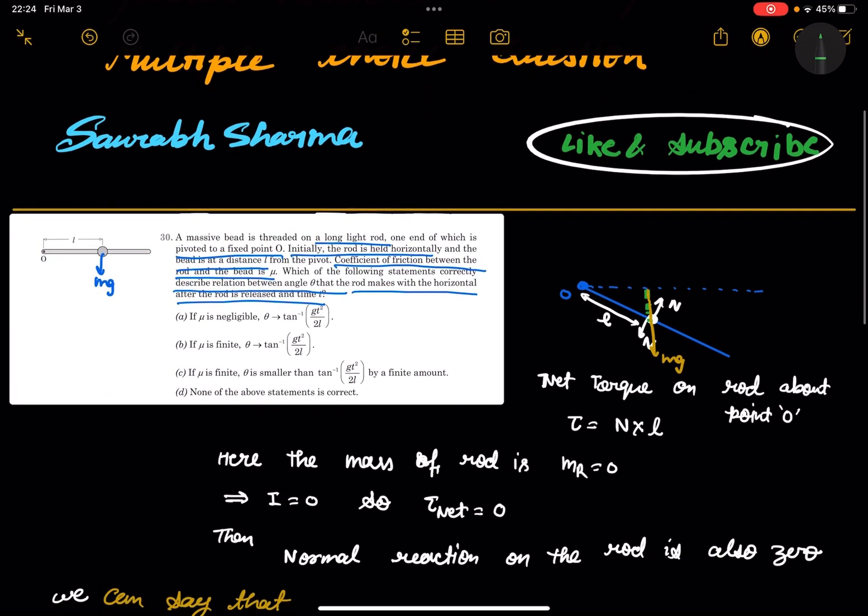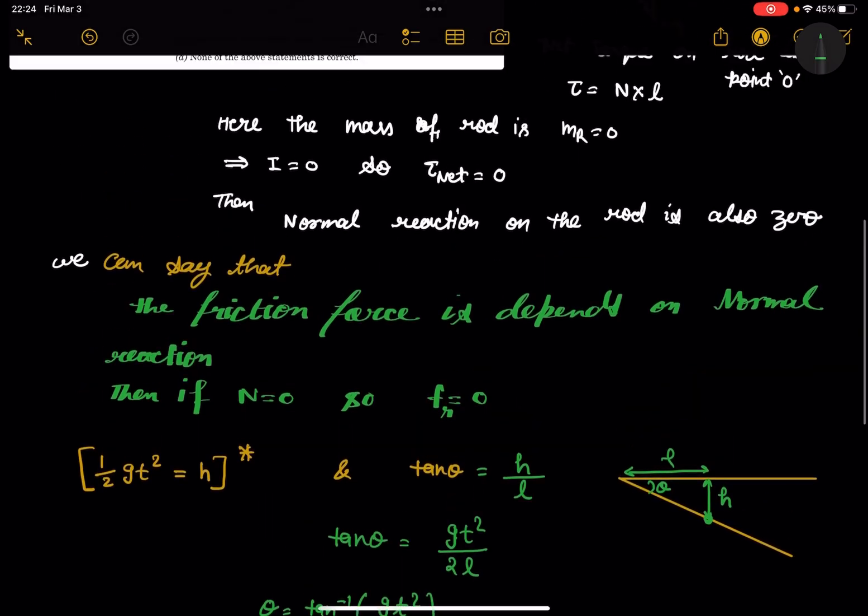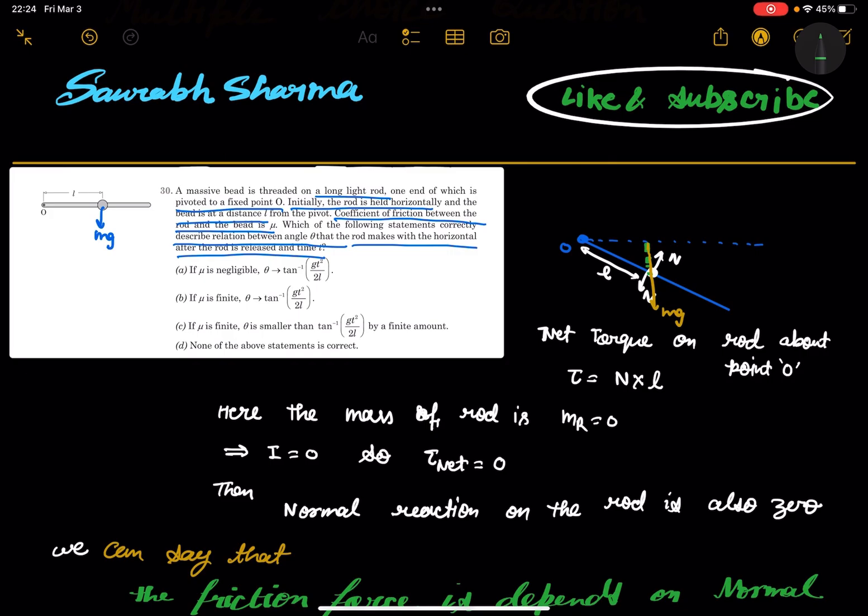So my dear friend, theta is equal to tan inverse Gt square by 2L. So you can say that mu is independent, and theta is tan inverse Gt square by 2L. So correct answers are A, B.